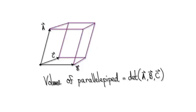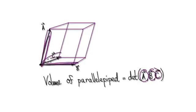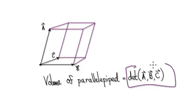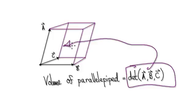Let me elaborate slightly more on the previous video. As a reminder, if you compute three vectors, the determinant will represent the volume of this parallelepiped.